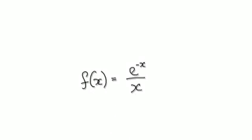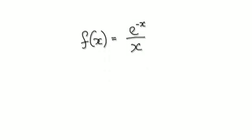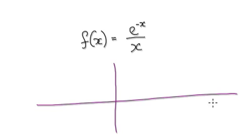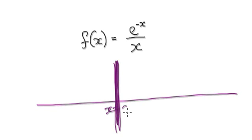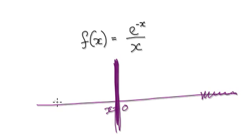In this video, we're going to make use of L'Hôpital's rule to sketch functions. Typically when you're sketching functions, you want to know what happens at x equals zero, because x equals zero is easy to evaluate. You also want to know what happens when x is very, very big, and what happens when x is very, very small.